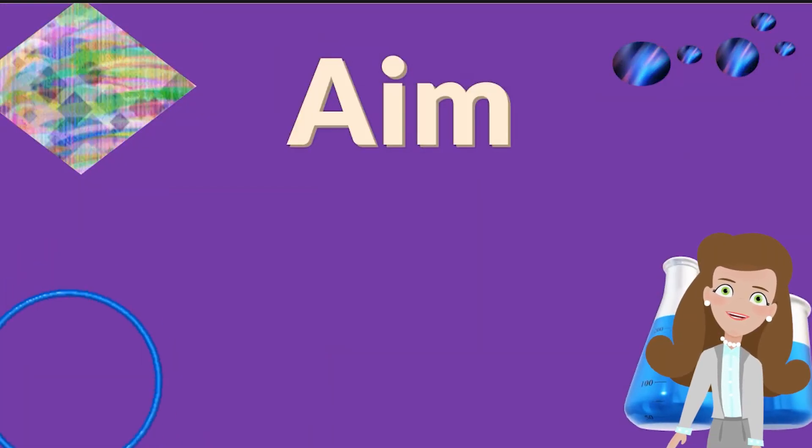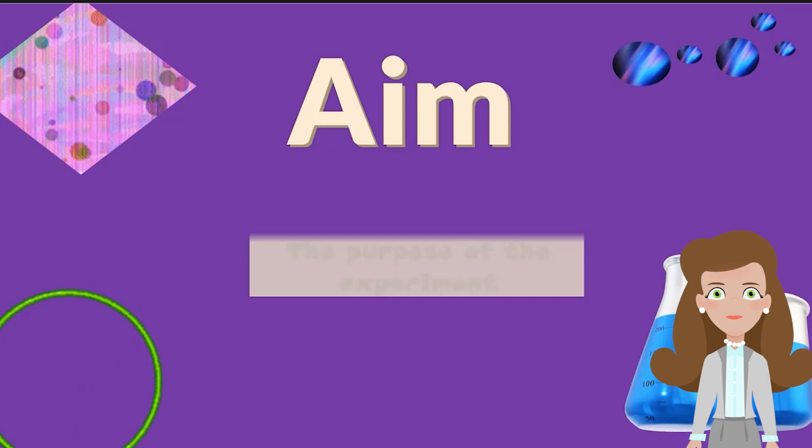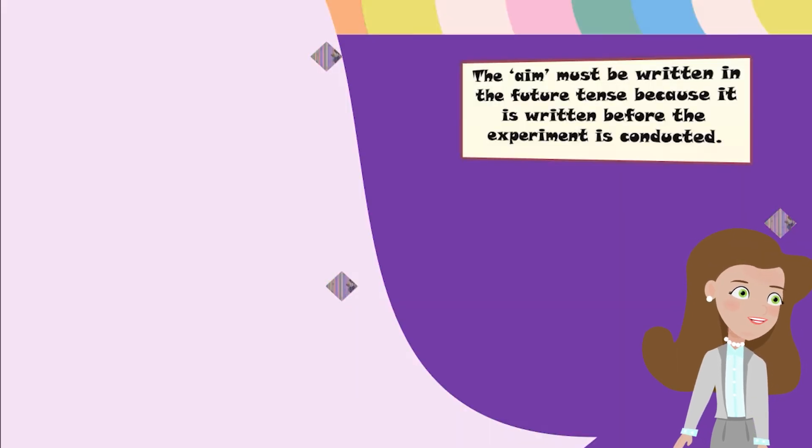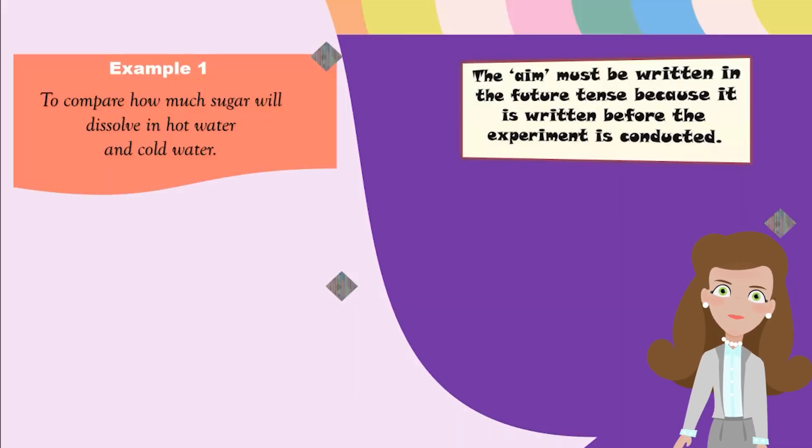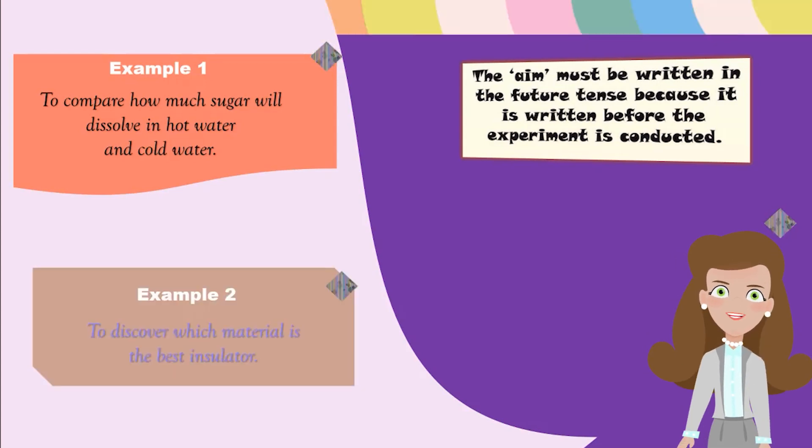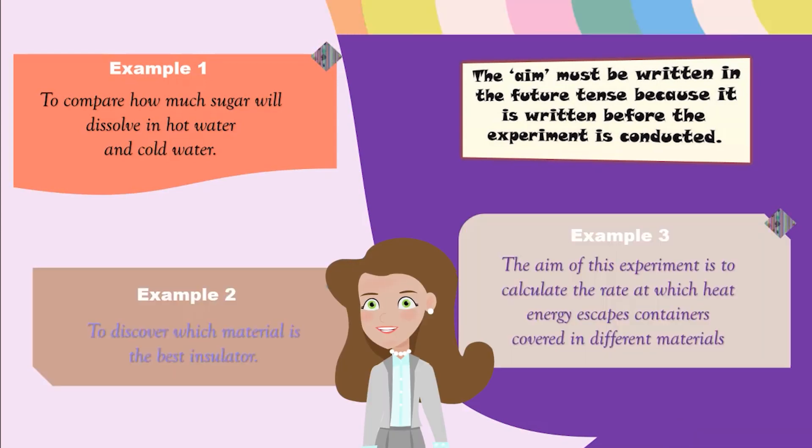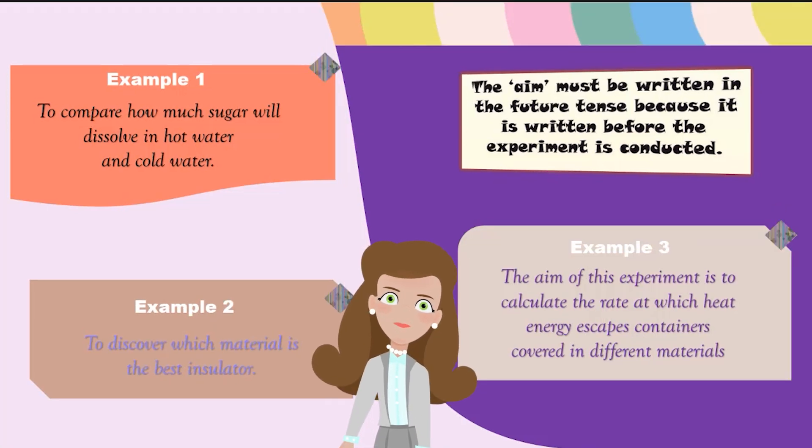Next we have the aim, which is the purpose of the experiment. The aim must be written in the future tense because it is written before the experiment is conducted. For example, to compare how much sugar will dissolve in hot water and cold water, to discover which material is the best insulator, or the aim of this experiment is to calculate the rate at which heat energy escapes containers covered in different materials.